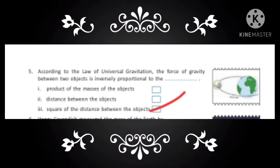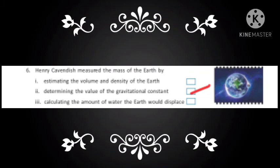There was a great scientist Henry Cavendish who was able to measure the mass of the Earth. But how? By determining the value of the gravitational constant. So, Henry Cavendish was the person who finds the value of the gravitational constant and using it, finds the mass of the Earth.